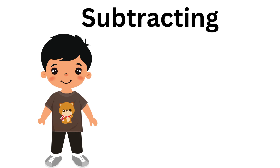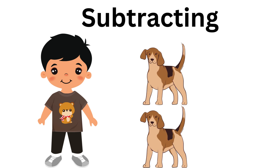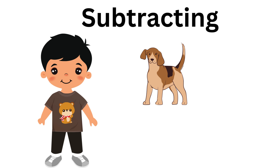This is Max, and Max has two dogs. He gives one dog to his friend. He subtracts one of the dogs. He had two, but he gave one away. And now how many dogs does he have after subtracting one?